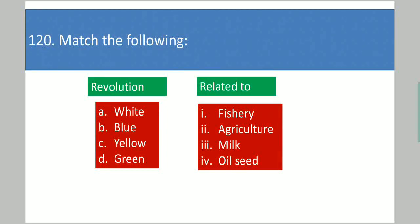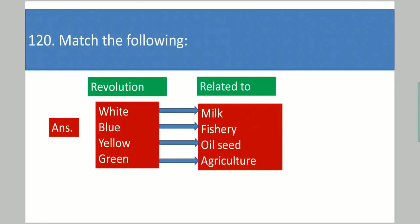Next question: Match the following revolutions. Column 1: white, blue, yellow, green. Column 2: related to fishery, agriculture, milk, oilseed. Your answer is: white is related to milk, blue is related to fishery, yellow is related to oilseed, and green revolution is related to agriculture.